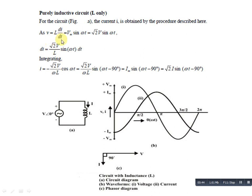We cross multiply to get the standard equation for inductance in terms of root2·V·sin(ωt). Here we consider the sinusoidal waveform, so V = Vm·sin(ωt).